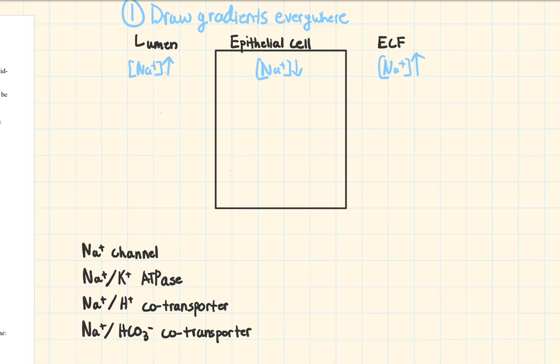It's not actually telling you where sodium is high — it's saying you should already know that. For hydrogen, the chart tells us it is concentrated inside the lumen, so hydrogen is low everywhere else.